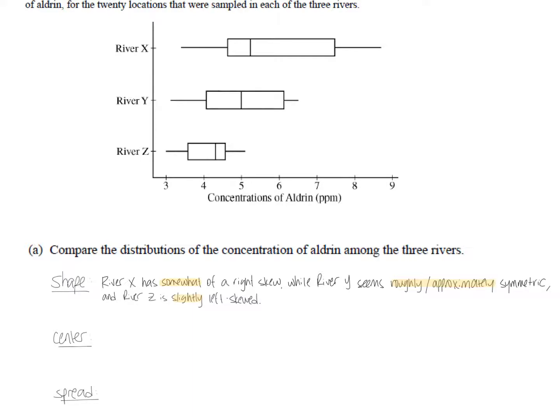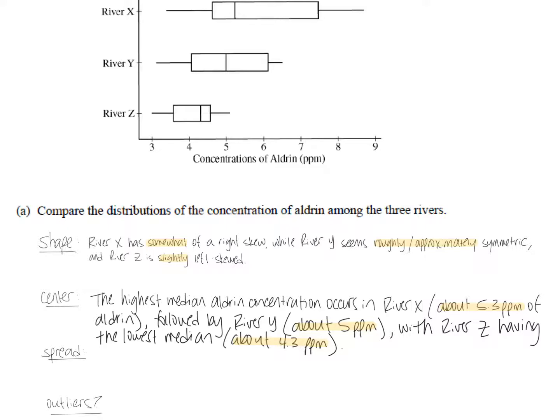And then the last one, river Z, again, the whiskers are about the same size, but look at how much space is in here between Q1 and the median versus the median and Q3. So that's a slight left skew. Alright, so next we're talking about center, and just because we have box plots here, you know that the middle of the box plot, this middle line right here, refers to median, so that's why I chose to talk about median when I'm talking about center.